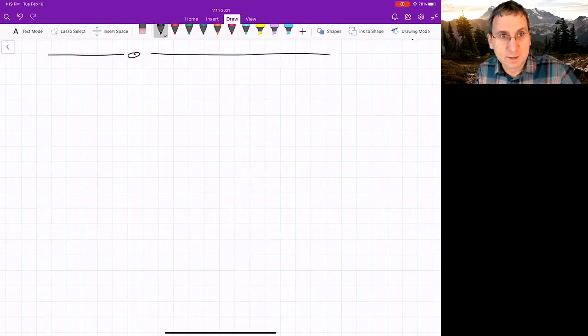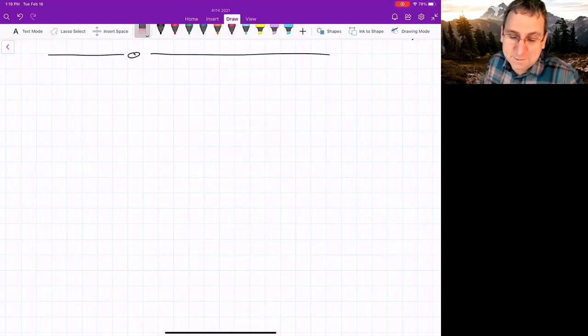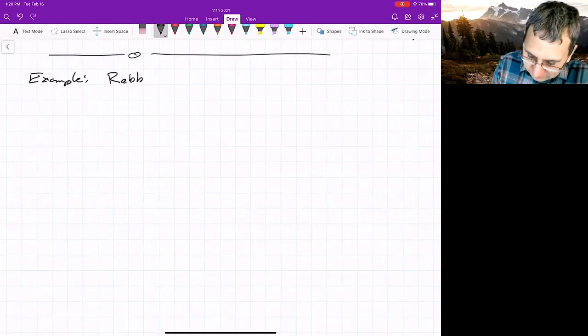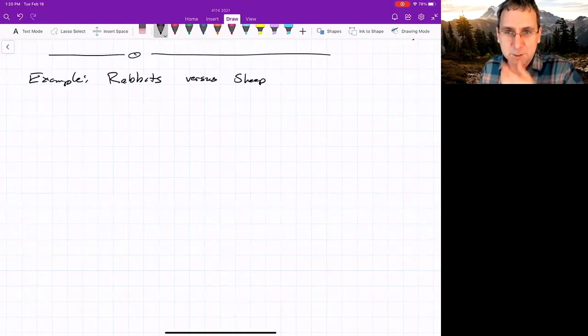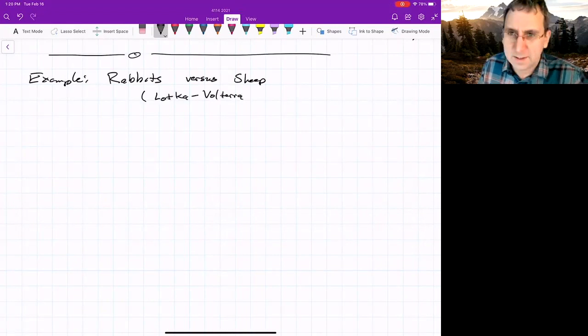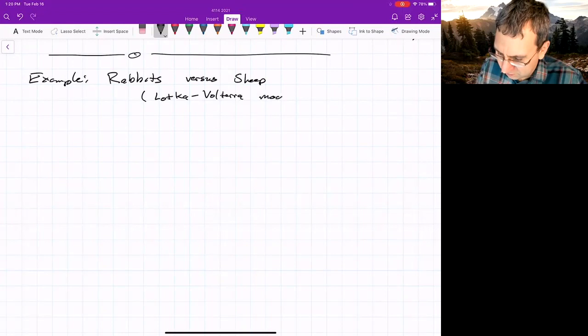Another population model. The nice thing about population models is they're not necessarily dictated by mechanics, so they can have weird terms that you're not going to get looking at a pendulum or something. So here's the example of rabbits versus sheep. And this will be a model of competition that's due to Lotka and Volterra, model of competition between species.